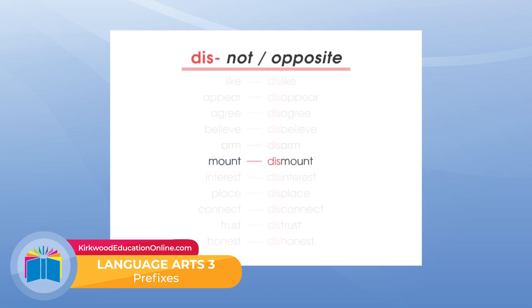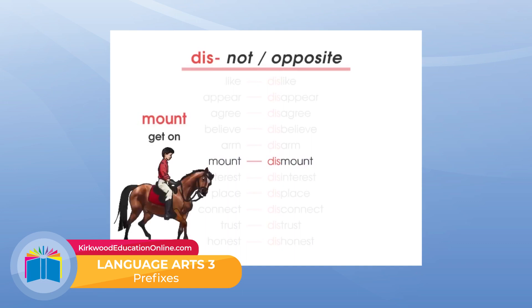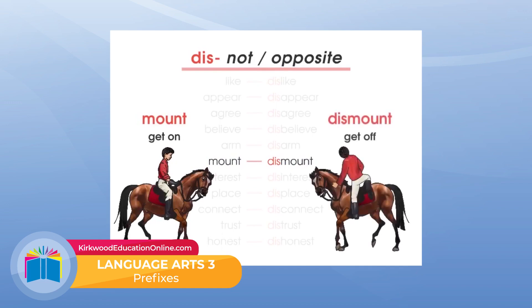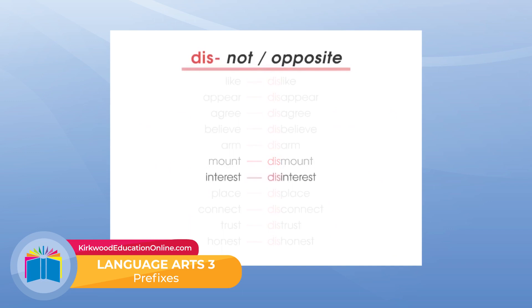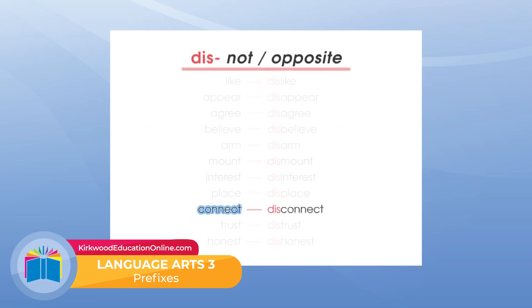'Mount' means to place oneself on, like to mount a horse — to get on a horse. 'Dismount' means to get off a horse. 'Interest.' Disinterest. 'Place.' Displace. 'Connect.' Disconnect. 'Trust.' Distrust. He has a lot of trust in me because I do what I say I do. Or he distrusts me, because he's got good reason.